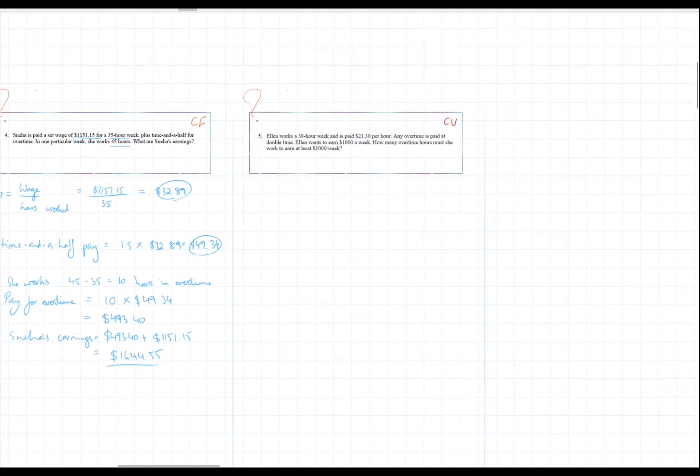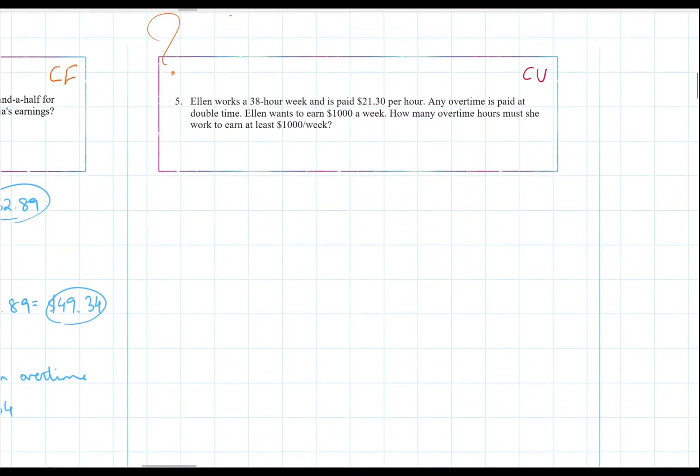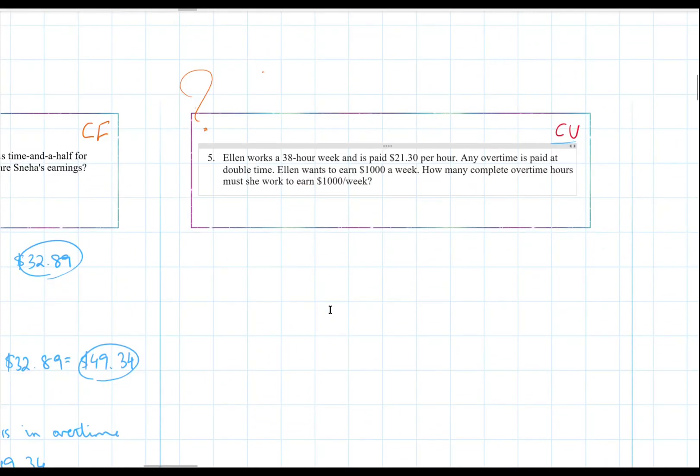Okay, let's look at a complex unfamiliar question. So first let's calculate Ellen's base pay, which is basically what she gets paid for working her regular hours. So that's going to be 38 hours worked times $21.30, which is her hourly pay. That's going to be $809.40.